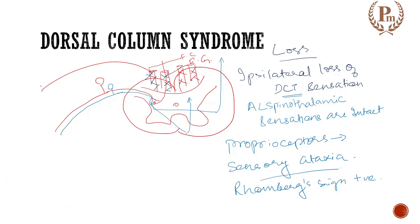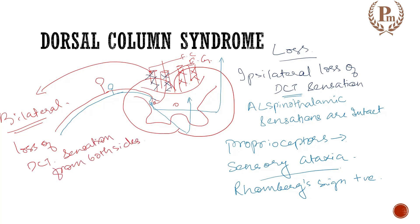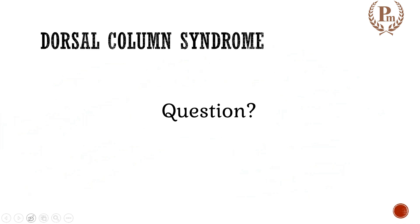Now let's consider if the damage is bilateral. If the damage is bilateral, there will be loss of dorsal column tract sensations from both sides, and there will be sensory ataxia, as the dorsal column tract carries proprioceptive fibers. How about the anterior lateral spinothalamic tract sensations? They will remain intact.